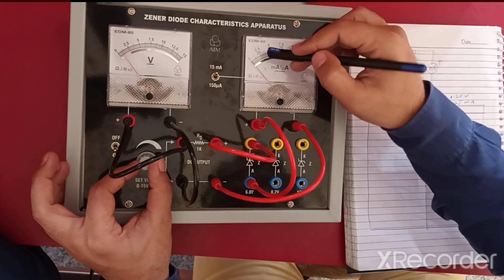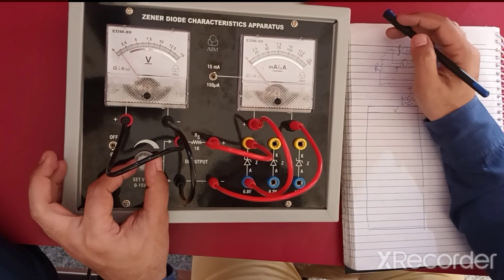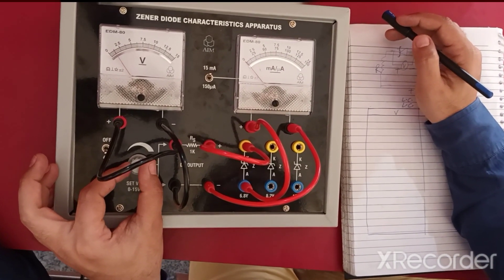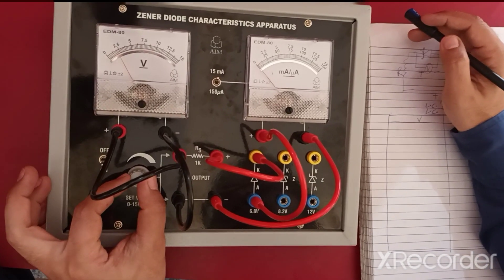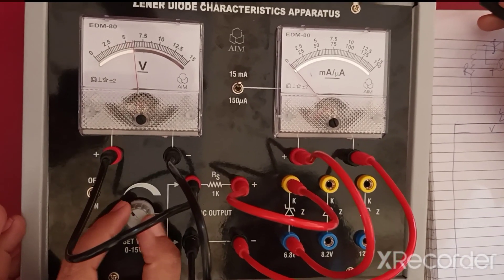Correspondingly, we will measure the reading of the milliammeter. You can see there is no reading for 5, 6, and 7, but it starts increasing suddenly beyond this value.